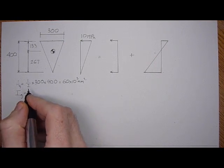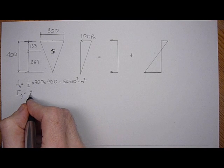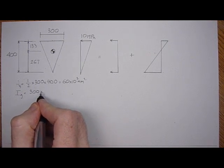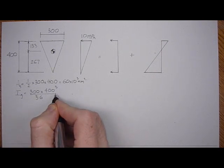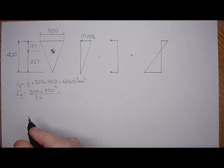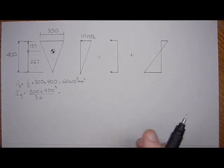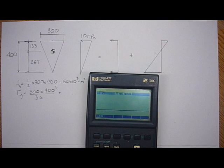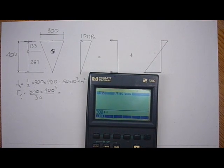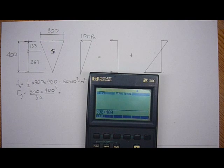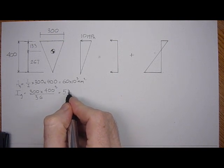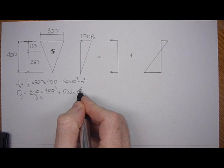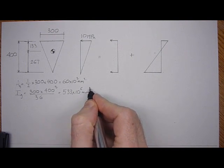is base times height cubed over 36, and this can be found in any steel design handbook or concrete design handbook. It's generally readily available. 300 times 400 cubed divided by 36. So that's 533 E to the sixth millimeters to the fourth.